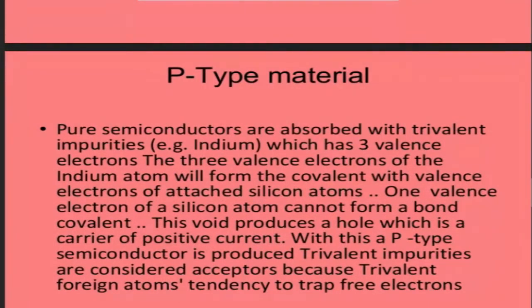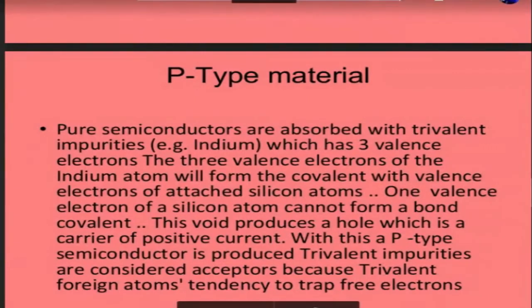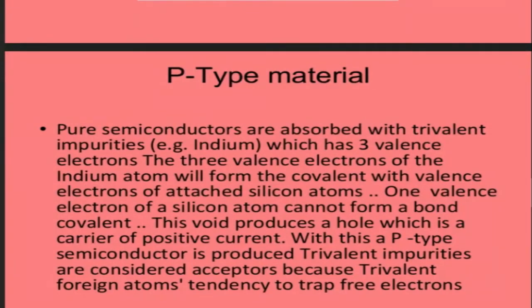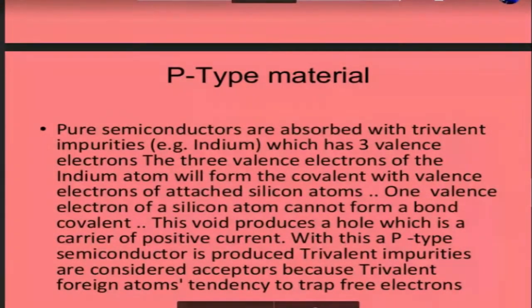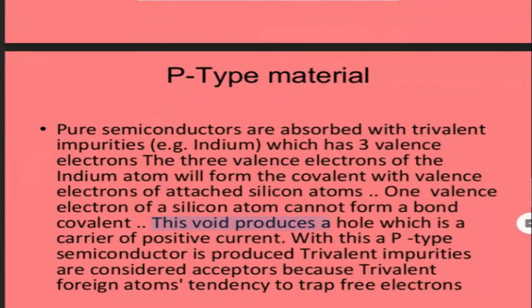Now for p-type material — in n-type there are extra fifth valence electrons. In p-type we reduce from five to three. Pure semiconductors are doped with a trivalent impurity like indium, which has three valence electrons. These three valence electrons of the indium atom form covalent bonds with the valence electrons of silicon atoms. When there are fewer electrons, the bond is incomplete and a hole is created.